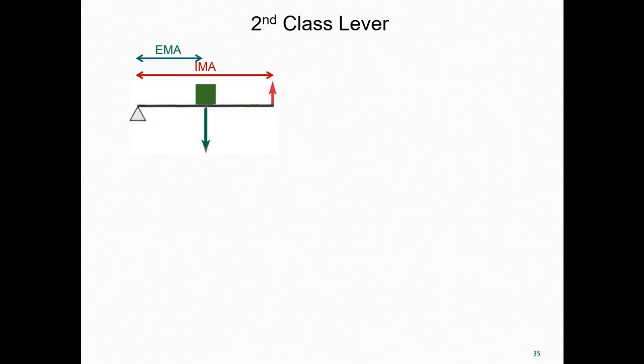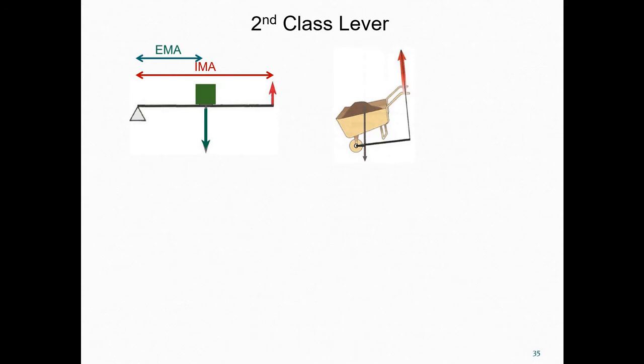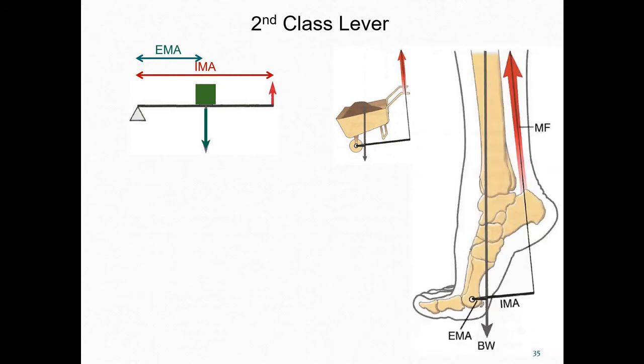In a second class lever, both the external force and the internal force are on the same side of the fulcrum, and the external force is closer to the fulcrum. A wheelbarrow is a second class lever — the load is placed close to the fulcrum, and the effort is exerted far away from the fulcrum. The actions of a calf raise or standing up on your toes can be interpreted as an example of a second class lever acting on the body.